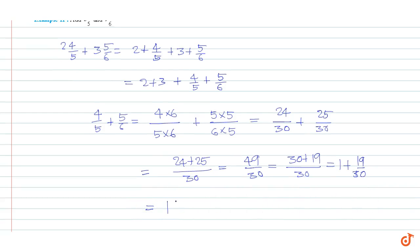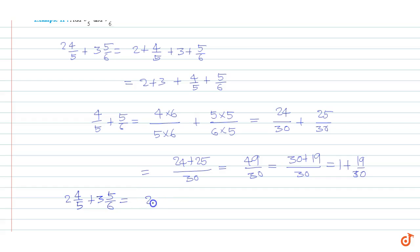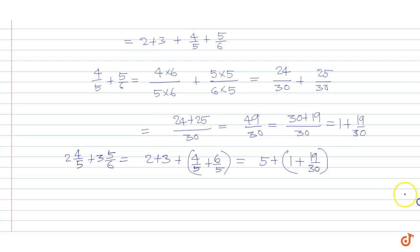So the full expression equals 2 plus 3 plus 1 plus 19/30, which equals 5 plus 1 plus 19/30, equal to 6 plus 19/30. This is equal to 6¹⁹⁄₃₀. That is our answer.